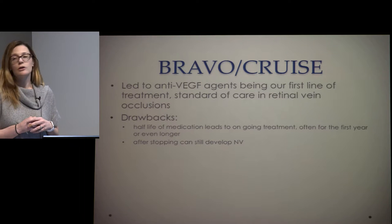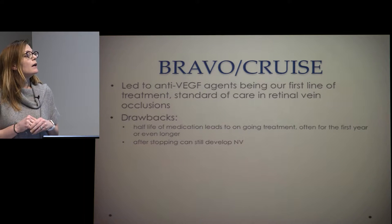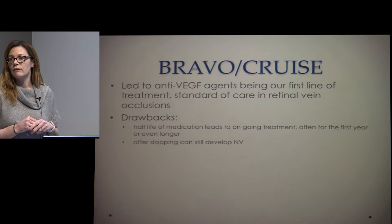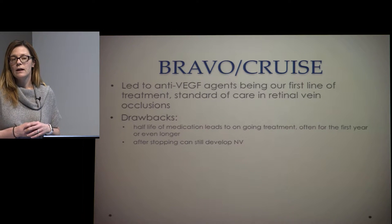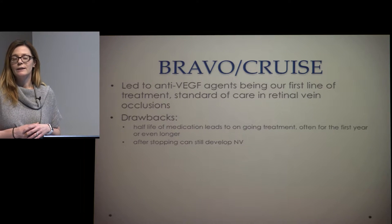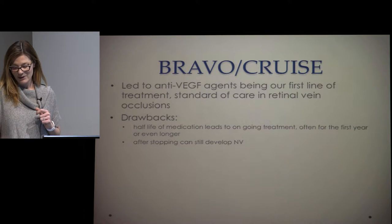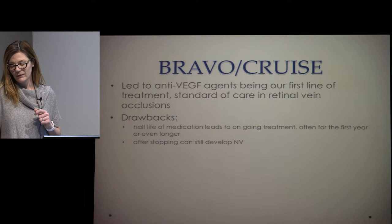This was the big shift in our standard of care — starting anti-VEGF agents for branch vein occlusions. The biggest drawbacks are the half-life of the medications and the need for continual injections. It seems like patients will need injections for at least six months and even up to 18 months on average. Some patients I've been injecting for three or four years and can only get them to eight weeks; if they go nine weeks, they're worse.